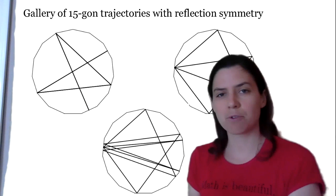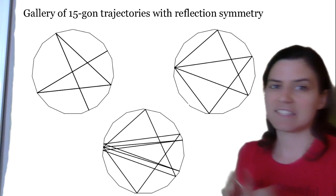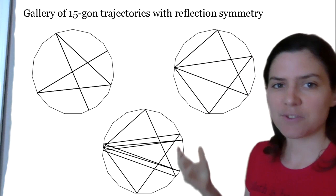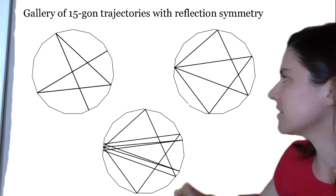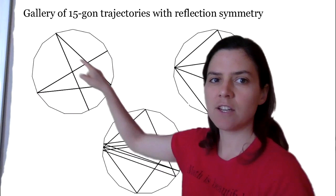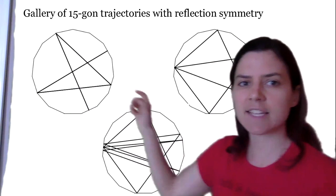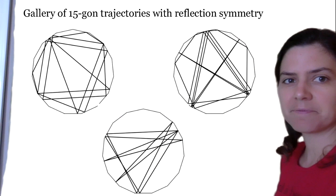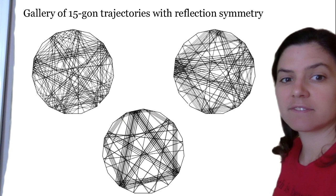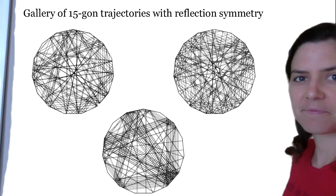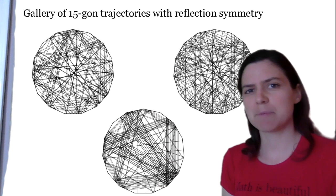We've written our program so that we can see the periodic billiard trajectories on tables with as many edges as you want, as long as it's an odd number. Here's the 15-gon. We saw that V-shaped trajectory that bounced out and back because it hit the edges perpendicularly. This one does the same thing — you can see it hits that edge perpendicularly, then this edge perpendicularly, and just goes back. That's a trajectory of period eight. Here are some other nice-looking ones. This one hits almost perpendicularly, but not quite. They can get pretty interesting — lots of parallel bits. These are things people never saw before we tried to look at them.